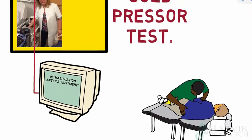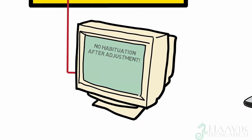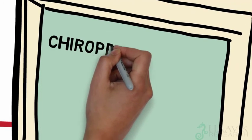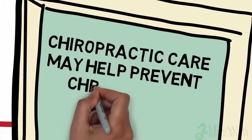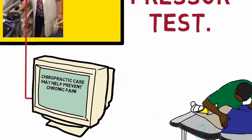The scientists think that this may mean that chiropractic care plays a role in preventing the brain adaptations that occur as pain becomes chronic. In other words, chiropractic care may reset the way the brain processes pain information so that it does not learn to be in chronic pain.